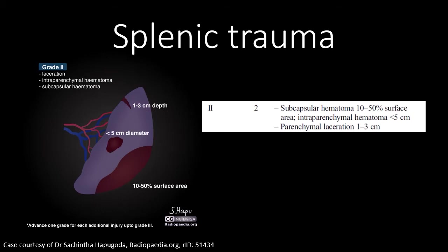A grade 2 injury can be a hematoma occupying less than 50% of the surface area. You can have an intraparenchymal hematoma — similar to what we described in the liver — but in this case the hematoma must be less than 5 cm, whereas in the liver it is less than 10 cm. A laceration of the spleen that is less than 3 cm in depth will be classified as grade 2.